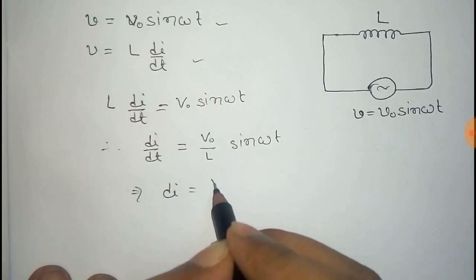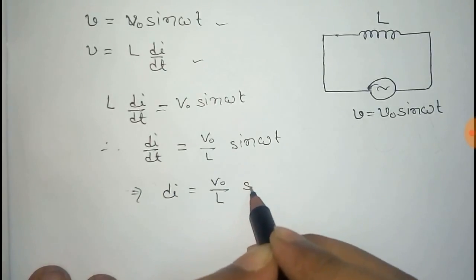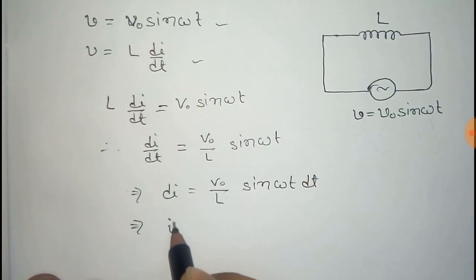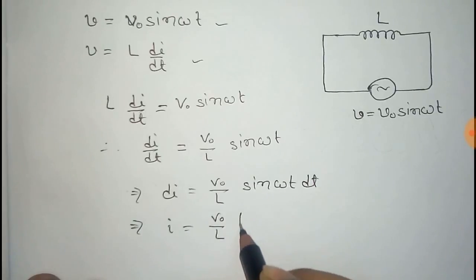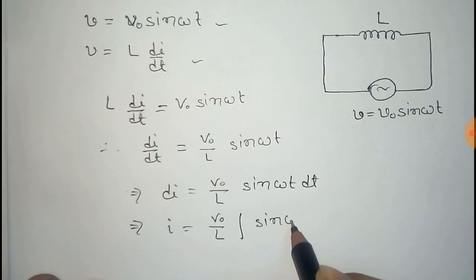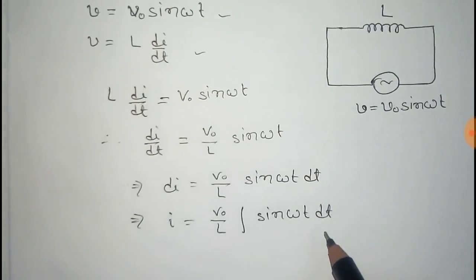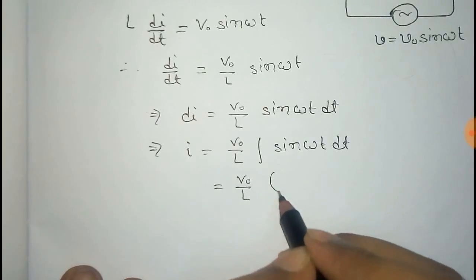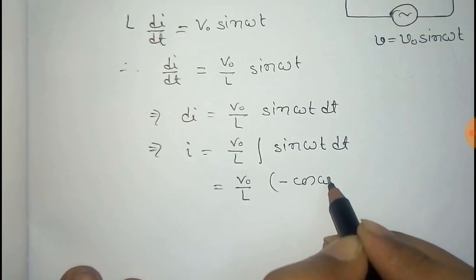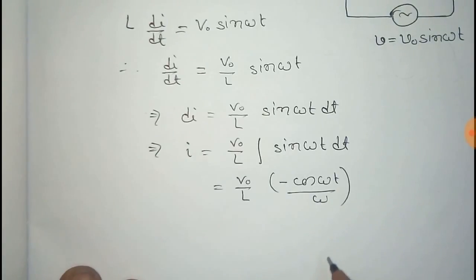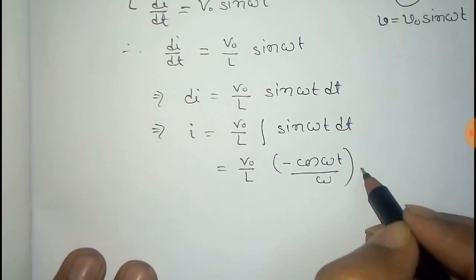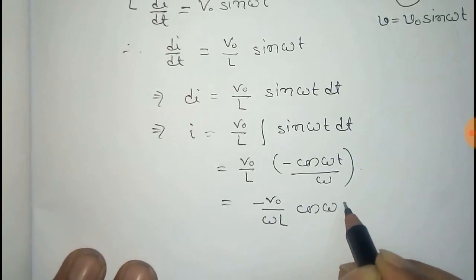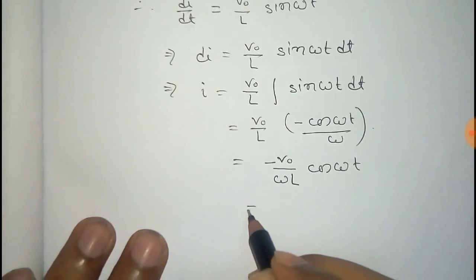From this, di equals V naught by L sine omega t dt. Thus I is the integral of this, so it will be the integral of sine omega t dt, where V naught by L is constant. After integration it will be minus cosine omega t by omega.